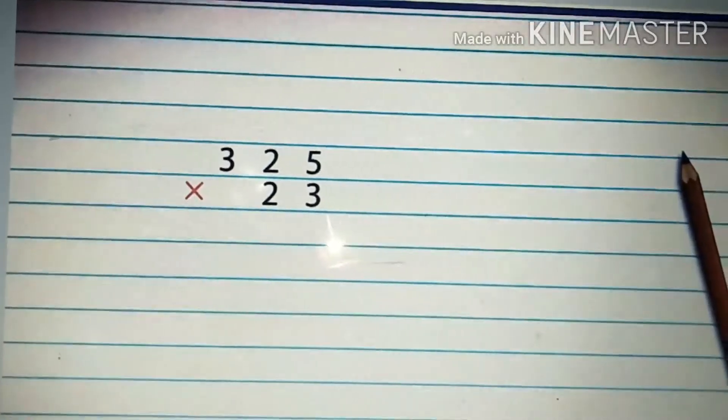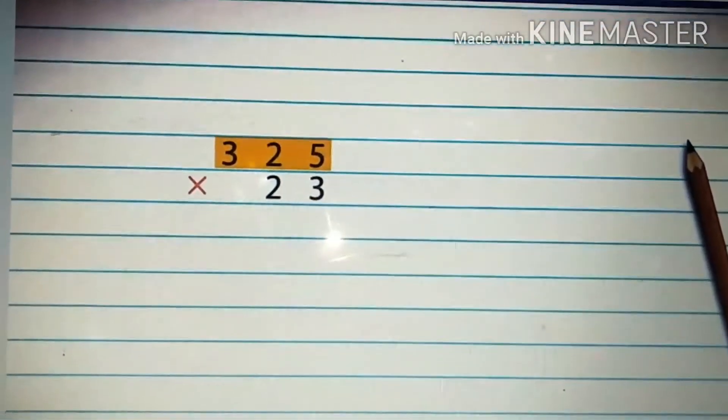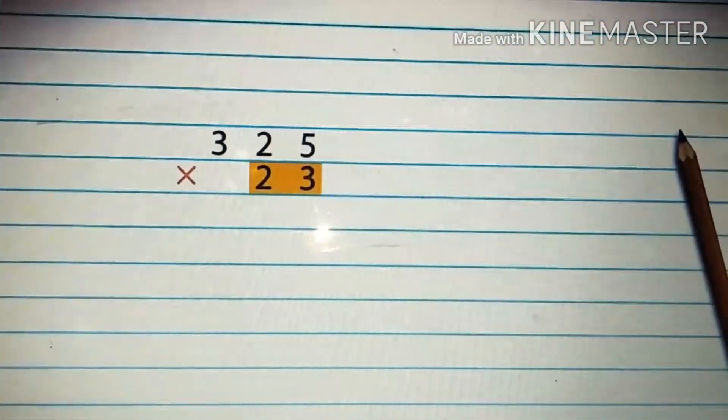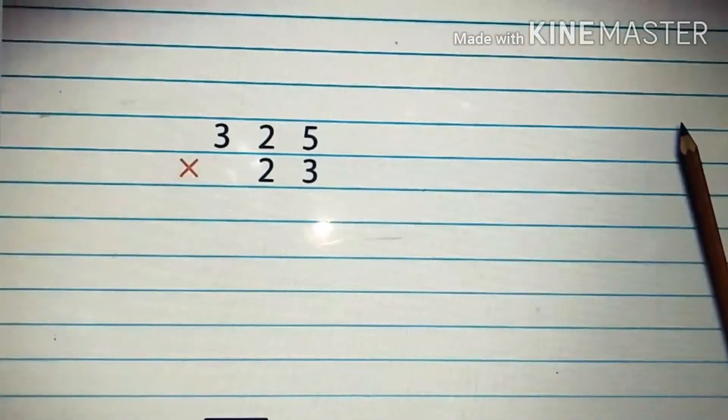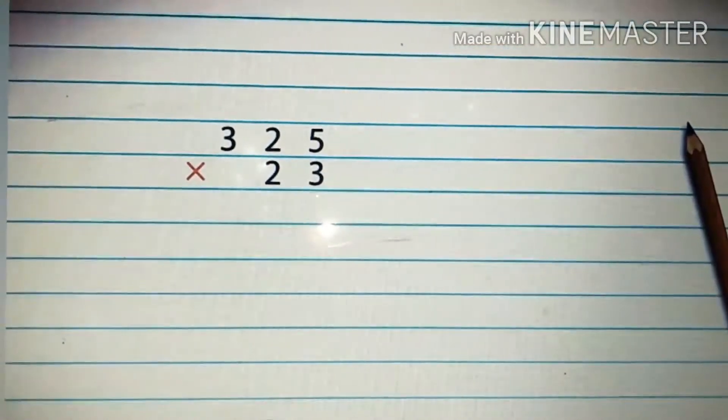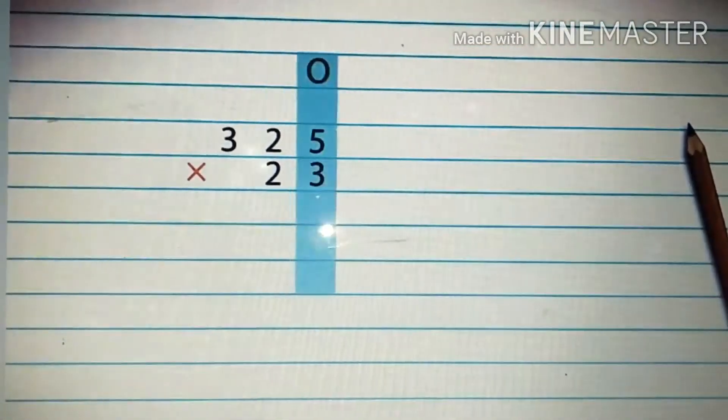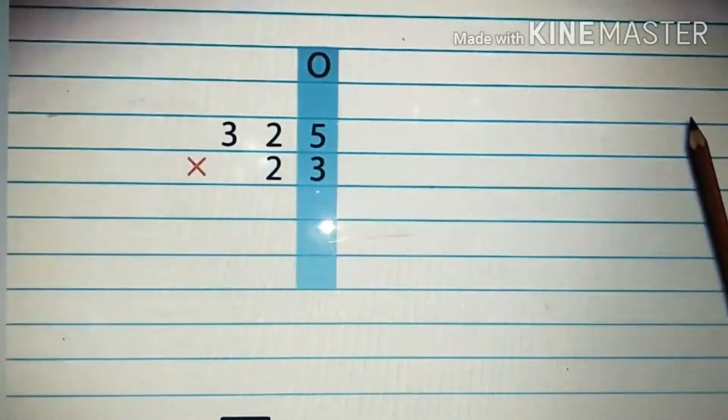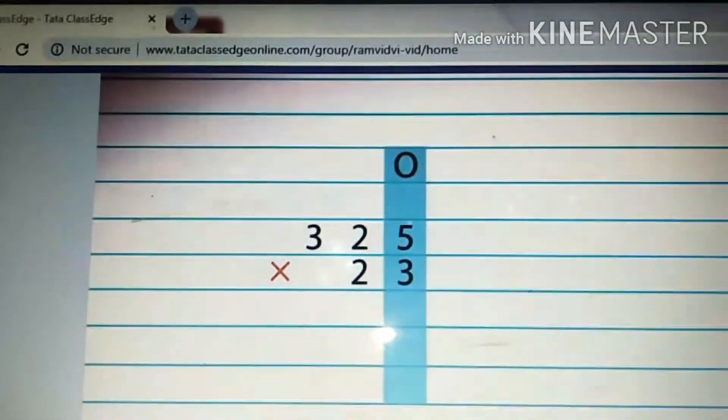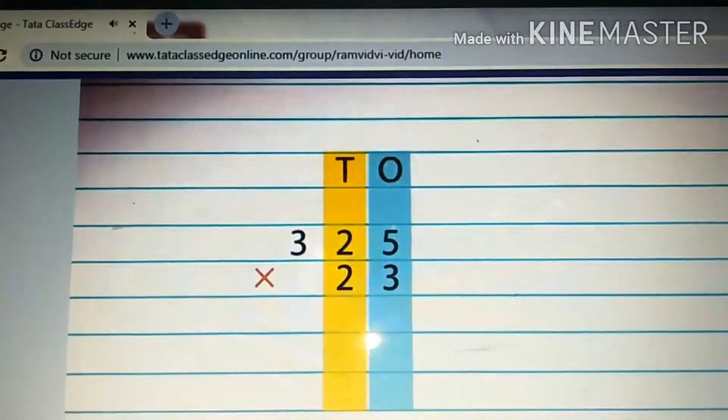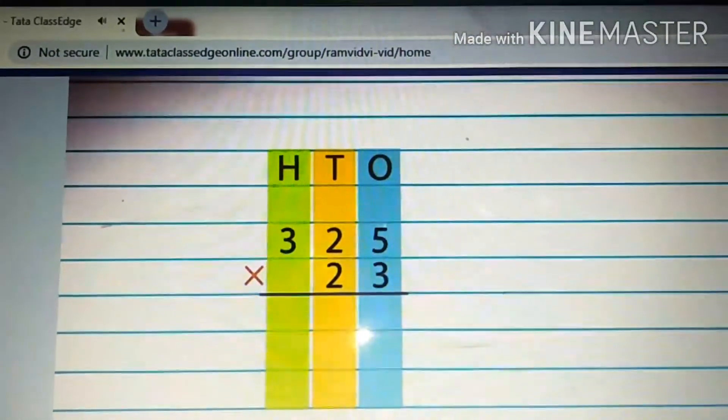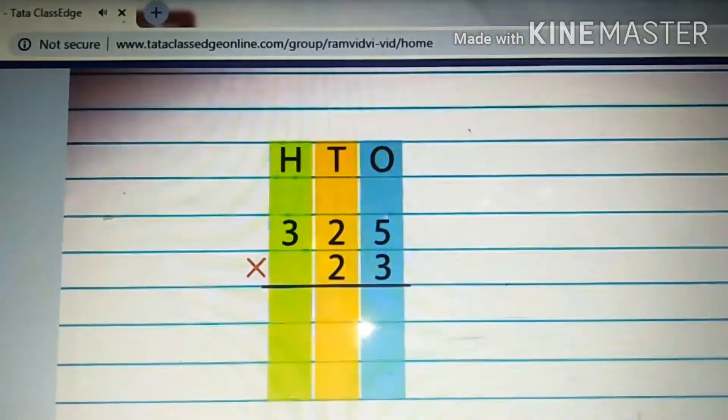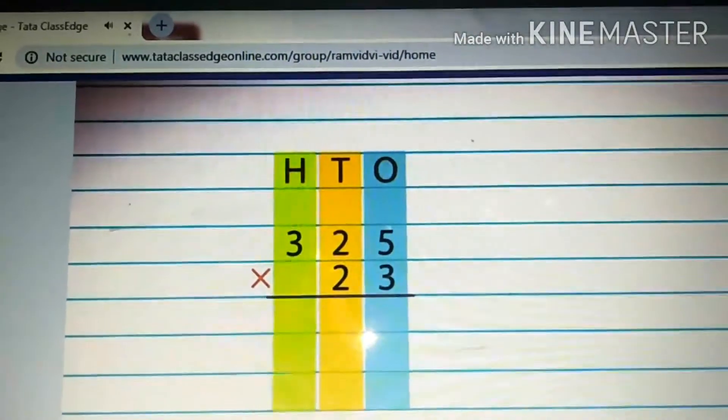The first step: arrange the numbers vertically, the greater number on top and the smaller number below it. Next, place the multiplication sign between the two numbers. Next, assign the place values: ones, tens, hundreds for each digit of the two numbers.